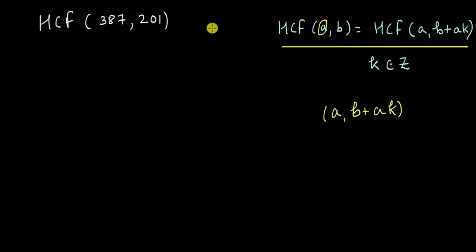Here a and b are positive numbers so we want to keep both of them positive. So let me subtract 201 from 387. Let's see what I'll get 387 minus 201. This will give me 6, 8 and 1.